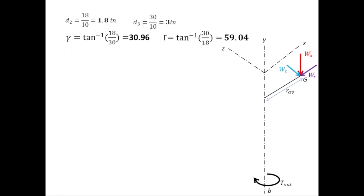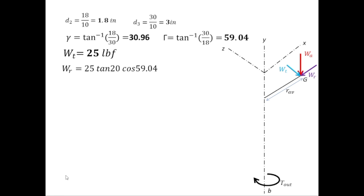The transmitted load Wt = 25 lbf. For gear 3, the radial force is Wr = Wt·tan(20°)·cos(Γ) = 25·tan(20°)·cos(59.04°) = 4.682 lbf. The axial force is Wa = Wt·tan(20°)·sin(Γ) = 25·tan(20°)·sin(59.04°) = 7.8 lbf. Note that capital Γ is used since we are computing forces on gear 3.